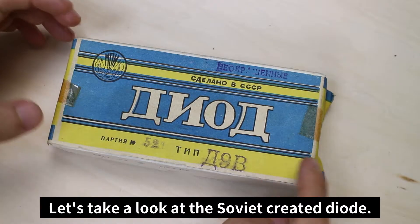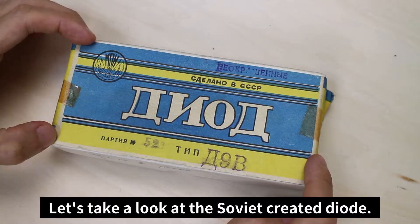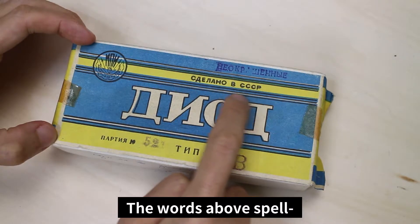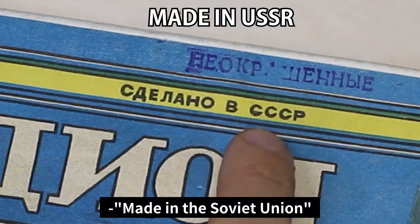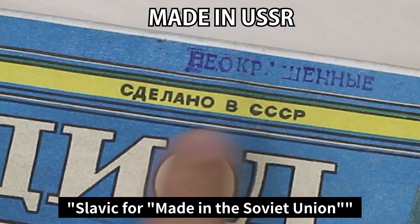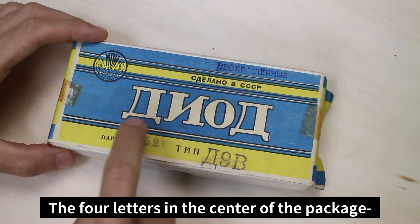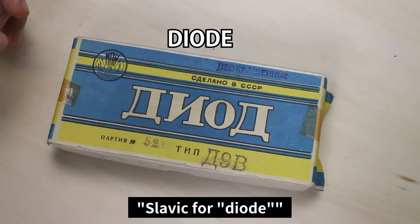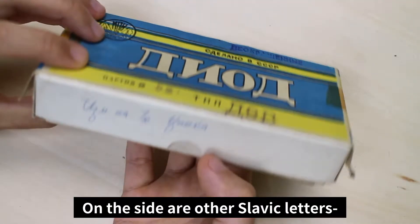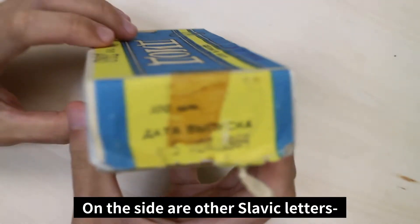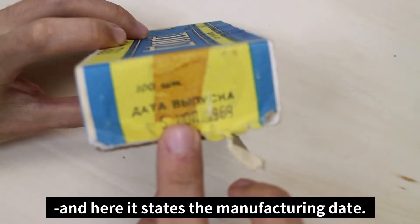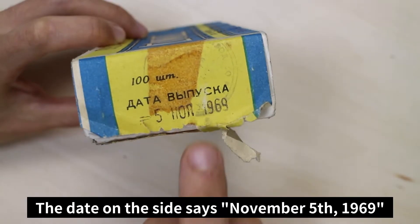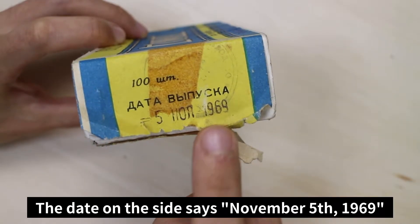Let's take a look at the Soviet created diode. The words above spell made in the Soviet Union. The four letters in the center of the package spell out DIODE. On the side there are other Slavic letters and here it states the manufacturing date. The date says November 5th, 1969.